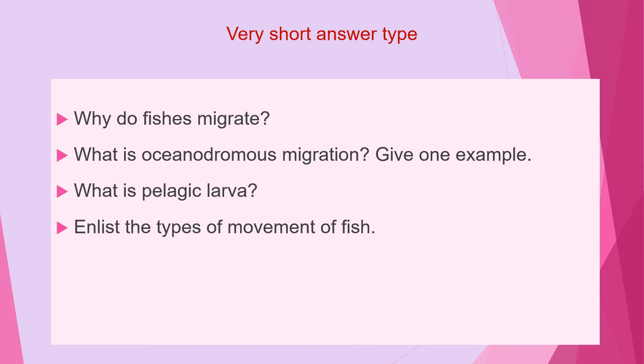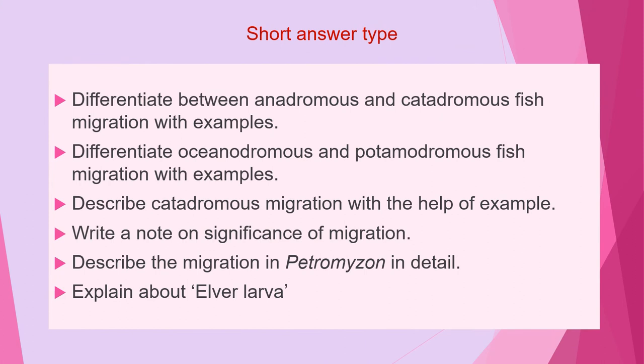The second category of questions are short answer type questions, which you have to answer in a single paragraph. The first question of this category is: differentiate between anadromous and catadromous fish migration with examples. Next is: differentiate oceanodromous and potamodromous fish migration with examples.